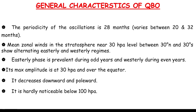QBO features alternating easterly and westerly bands descending at 1 km/month. Easterly phases are prevalent during odd years while westerly phases are stronger during even years — according to recent research, though the exact reason is still unknown. Maximum amplitude is at 30 hectopascal, corresponding to approximately 25 to 30 kilometers altitude, over the equator. Amplitude decreases both downward and poleward. It is hardly noticeable below 100 hectopascal, which corresponds to about 12 kilometers altitude.